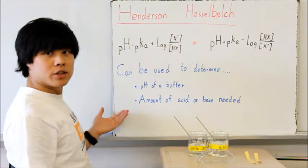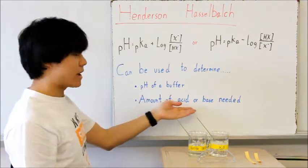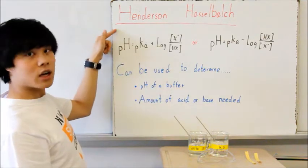Now, there is an easy calculation you can use to determine the pH of your buffer. Or, you can also use this calculation to determine the amount of acid or base needed to produce a buffer at a certain pH. It's called the Henderson-Hasselbalch equation.